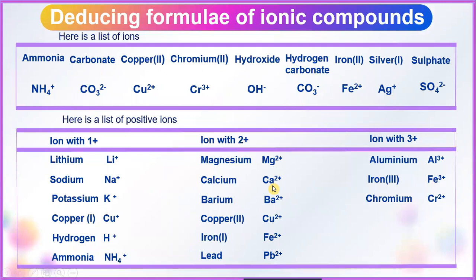Let's look into deducing formula of ionic compounds. Here is an example list of ions: ammonium NH₄⁺, carbonate CO₃²⁻, copper(II) Cu²⁺, chromium(III) Cr³⁺, hydroxide OH⁻, hydrogen carbonate HCO₃⁻, iron(III) Fe³⁺, silver(I) Ag⁺, sulfate SO₄²⁻.